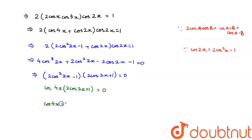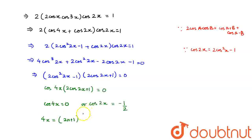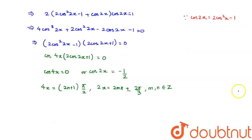So, cos 4x = 0 or cos 2x = −1/2. When cos 4x = 0, the general equation becomes 4x = (2n+1)π/2, so x = (2n+1)π/8. When cos 2x = −1/2, it becomes 2x = 2mπ ± 2π/3, so x = mπ ± π/3, for all integers m and n.